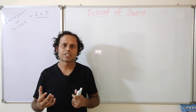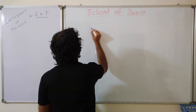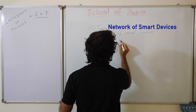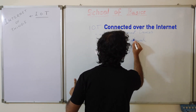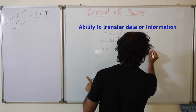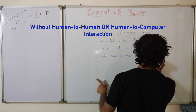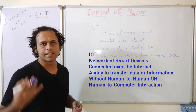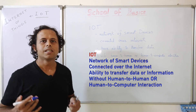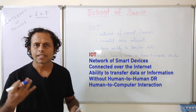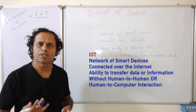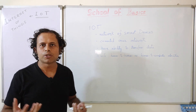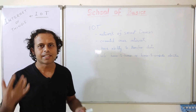By the official definition, IoT is a network of smart devices that have the ability to transfer data or communicate over the internet without requiring any human-to-human or human-to-machine interaction. The things, components, and equipment themselves can communicate with each other and pass information.